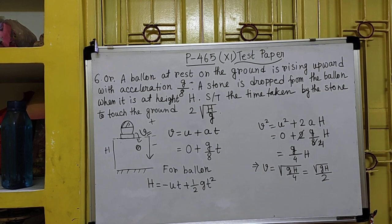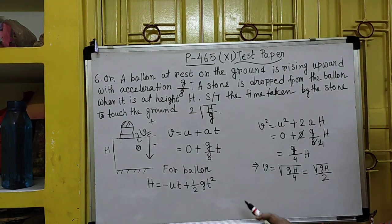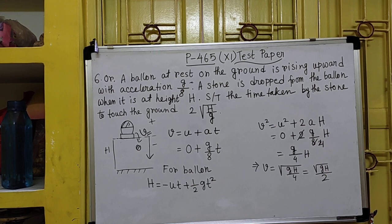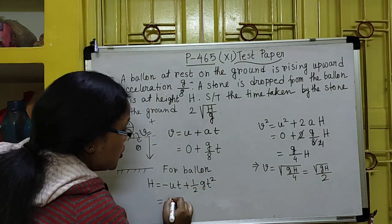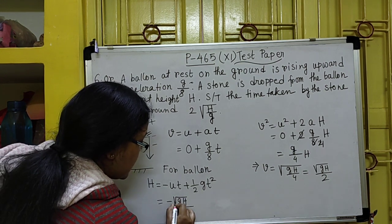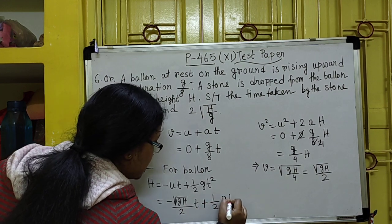The initial velocity U of the stone is the same as the velocity of the balloon at that point of time. Substituting U = √(GH)/2, the equation becomes: -H = -√(GH/4)·T + ½GT², which gives: minus root(GH/2)·T plus half GT squared.